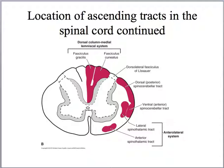This is part two of topic nine, the somatosensory system. What we're seeing here is the location of the ascending tracts in the spinal cord. The dorsal column medial lemniscal tract is shown here. These are going to be ipsilateral. From medial to lateral is the fasciculus gracilis and the fasciculus cuneatus, containing proprioceptive sensory information such as touch, pressure, and vibration.